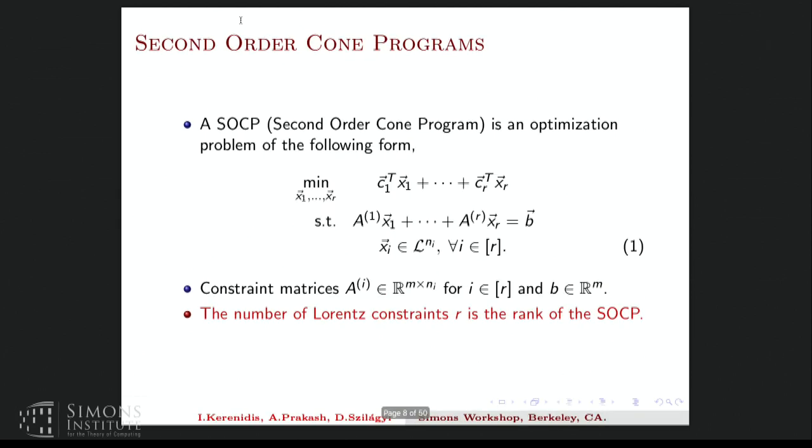So the two important parameters characterizing the size of this problem, in terms of which the running times will be given, are the rank and the dimension. So the rank of the SOCP is the number of Lorentz constraints. So it's the number of Lorentz cones involved in this problem definition. And the dimension is the sum of the dimensions of all the vectors. So n is the sum of N_i, and R is the number of Lorentz cones. So the running times of all algorithms will be given in terms of R, n, and the duality gap, or how close the solutions are to the optimal.